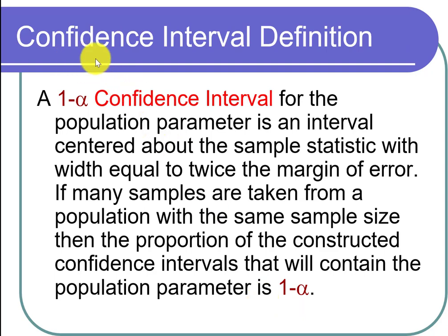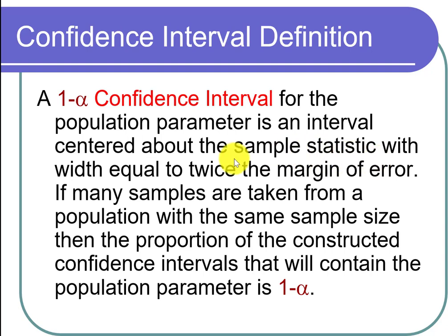A (1 minus alpha) confidence interval — typically a 95% confidence interval — for the population parameter is an interval centered about the sample statistic, such as the sample mean or sample proportion, with width equal to twice the margin of error. The width is twice the margin of error because you go left by the margin of error and right by the margin of error, making the total width two margin of errors.